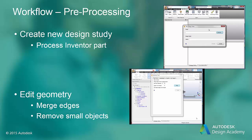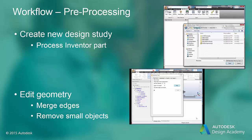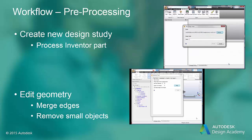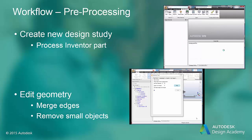Now we start with the CFD preprocessing task. We begin by creating a new CFD design study and choosing the CAD part that we have already built. We give the design study a name that will be identifiable for us, so we are going to call this our Onera airfoil design study. When we hit create, the edit geometry task will appear.